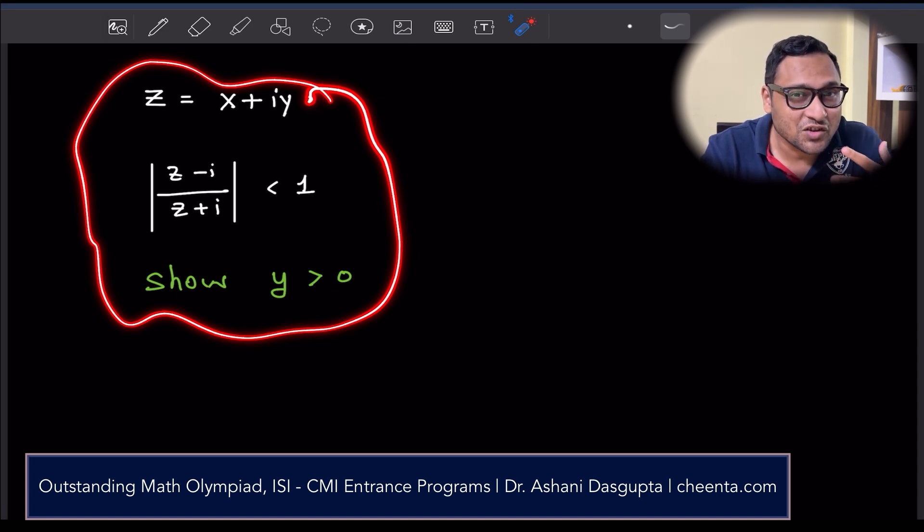This problem is from ISI B Star B math entrance, but it's also useful for mathematical olympiads like IOQM, American math competition and so on. You can check the link in the description for more resources related to this.